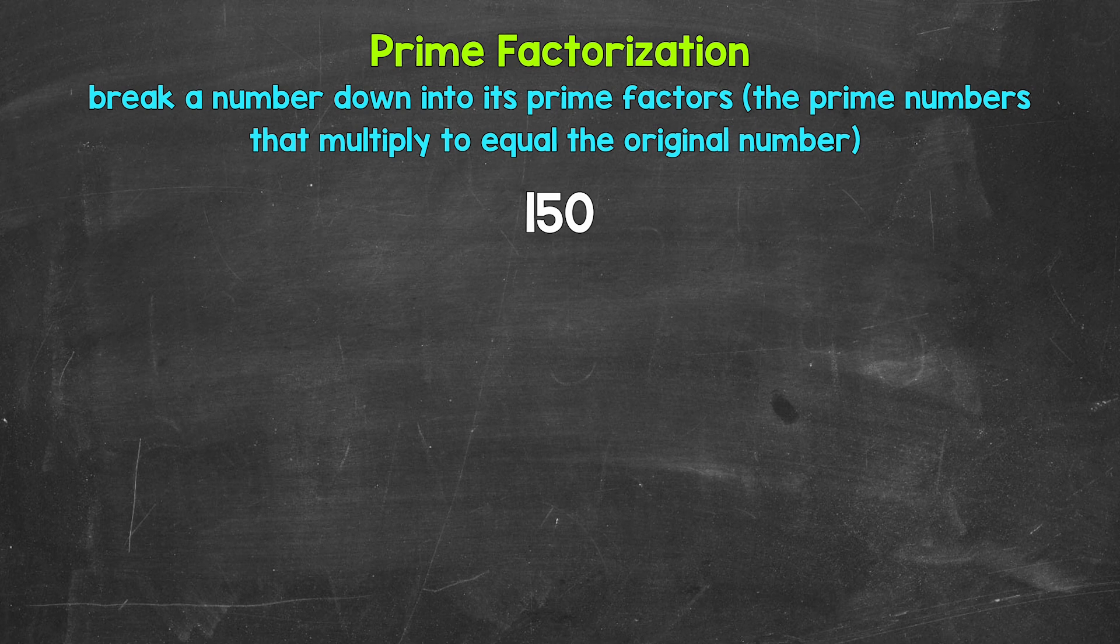So we need to start here by breaking 150 down into two factors, two numbers that multiply to give us 150. Well, three and 50 are factors of 150. Three times 50 equals 150. So let's break this down into three and 50.